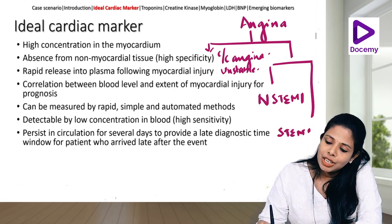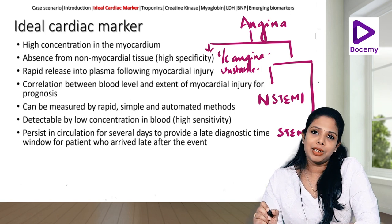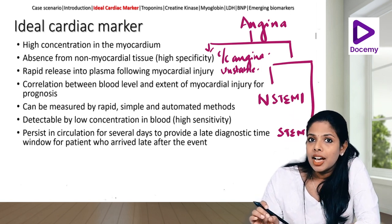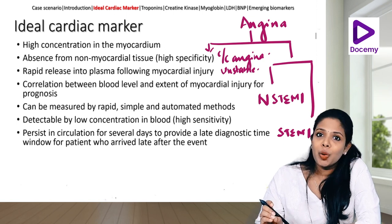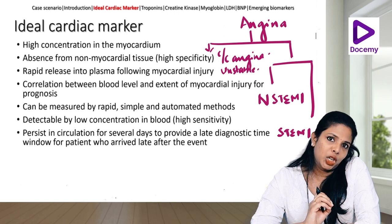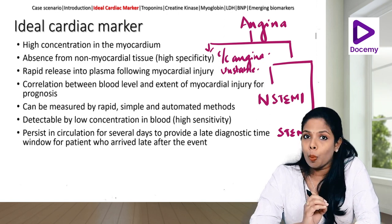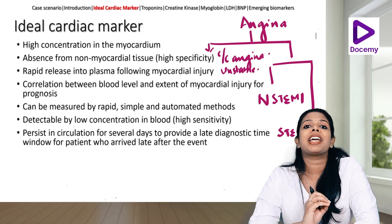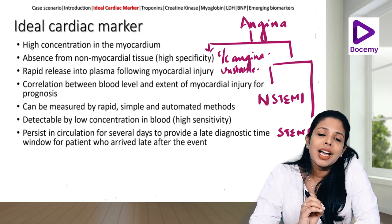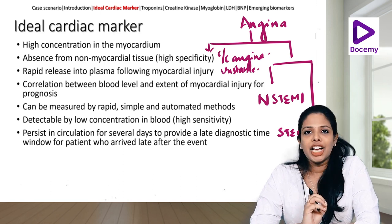Then we have ST-segment elevation MI, where you have typical ST-segment elevation consistent with cardiac arterial territories and the troponins are also going to be elevated. So whenever you have chest pain, whether the patient needs to be thrombolyzed or undergo primary PCI will be dependent on the troponins, unless you have a very typical ECG suggestive of arterial territory involvement.